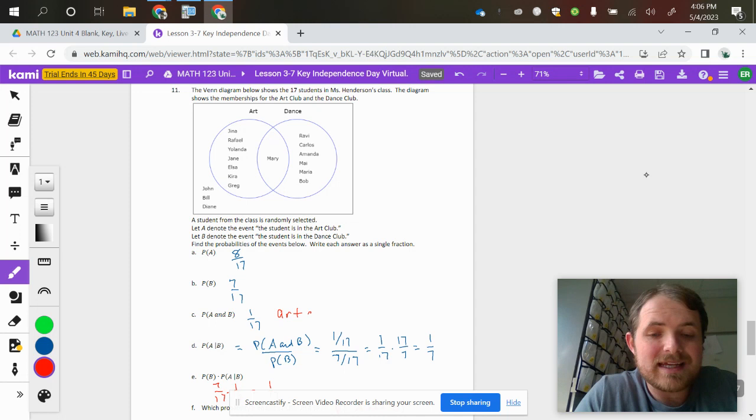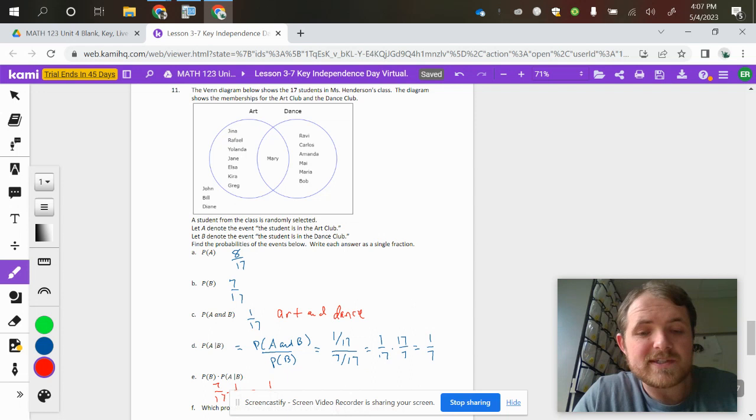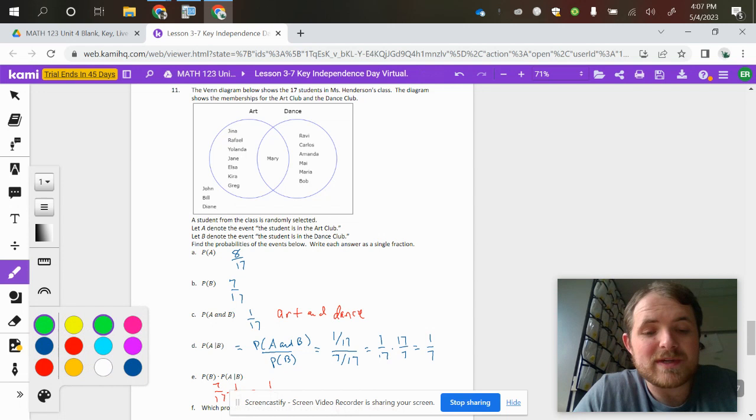Part C says probability of A and B, so that's the probability that someone is in art and dance. As you can see, Mary is the only one in both, so it's just 1 out of 17.